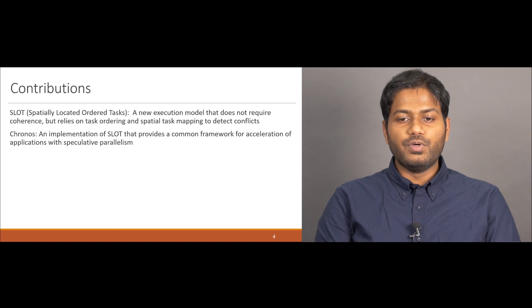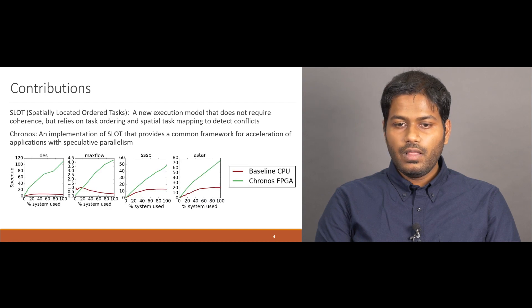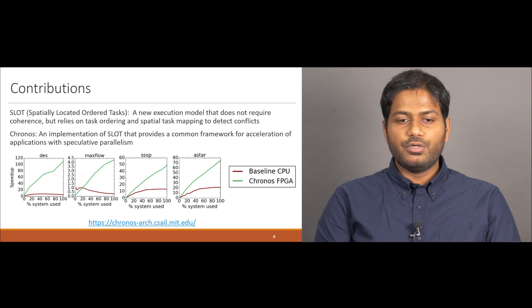Using this insight, we propose two contributions. SLOT, or spatially located ordered tasks, is a new execution model that does not require coherence, but instead rely on task mapping and task ordering to detect conflicts. Kronos is an implementation of SLOT that provides a common framework for acceleration of applications with speculative parallelism. We use Kronos to build accelerators for several hard-to-parallelize applications, achieving significant speedups for a 40-threaded baseline CPU. Kronos is open source and can be accessed from this URL.